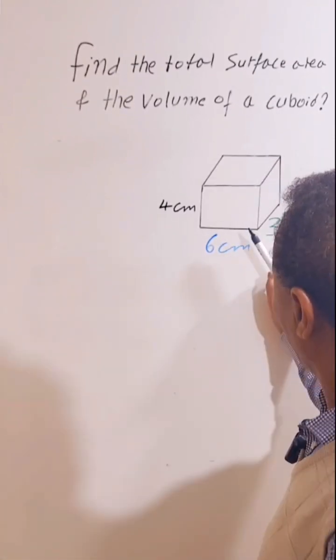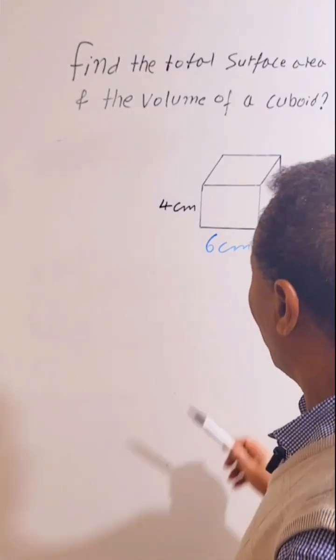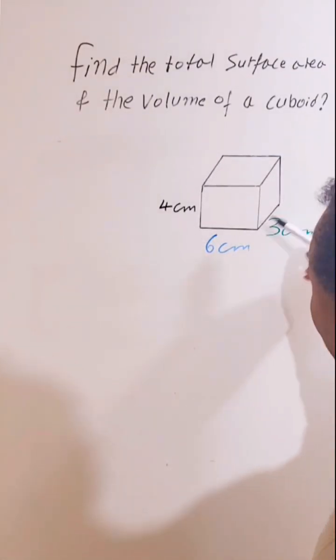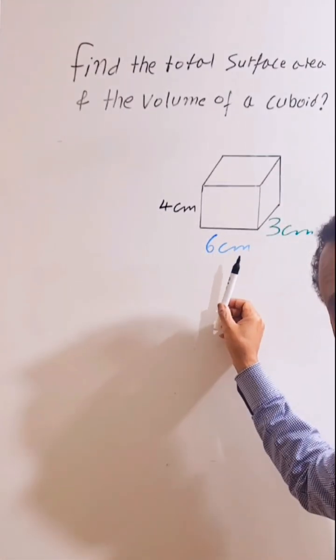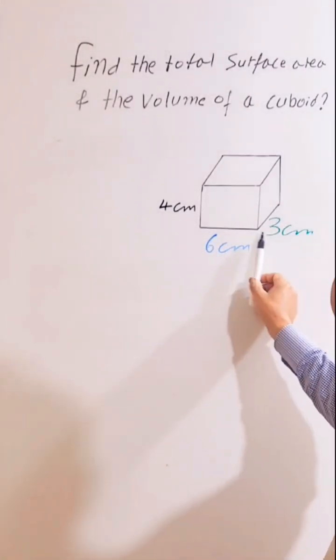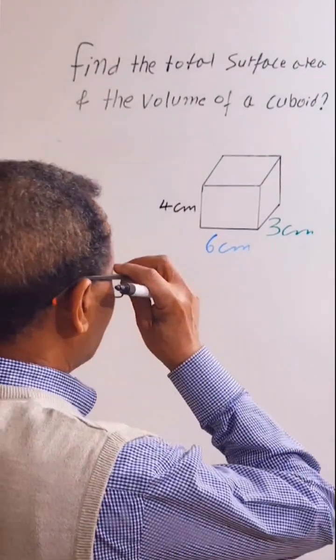This is the cuboid, not to be confused with the cube. The cube has all sides equal, but the cuboid, as you can see, has different sizes.